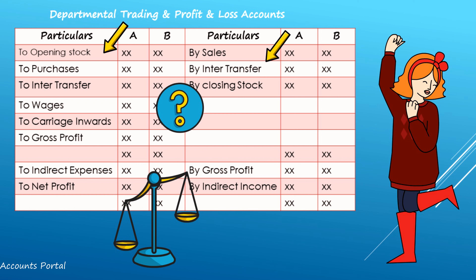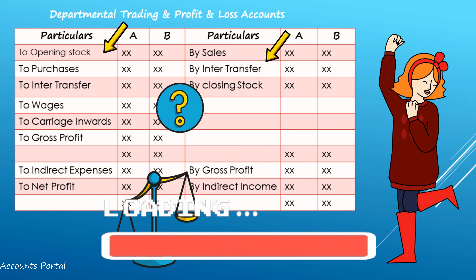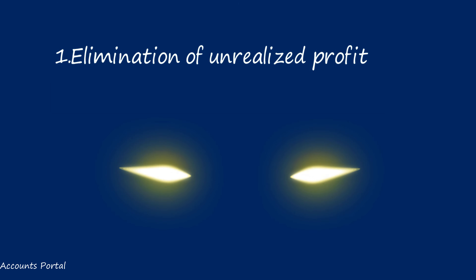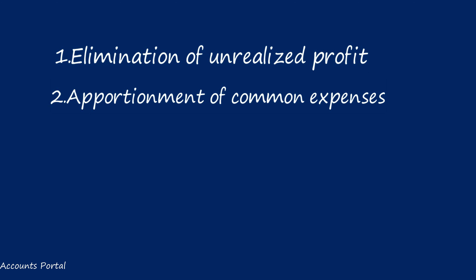Departmental accounts are prepared for internal decision-making purposes. In this chapter, we are not going to learn anything new in final accounts — we do a single-column trading profit and loss account; in departmental accounts we do multiple columns. The two unique things we are going to learn are: first, elimination of unrealized profit; and second, apportionment of common expenses to various departments.